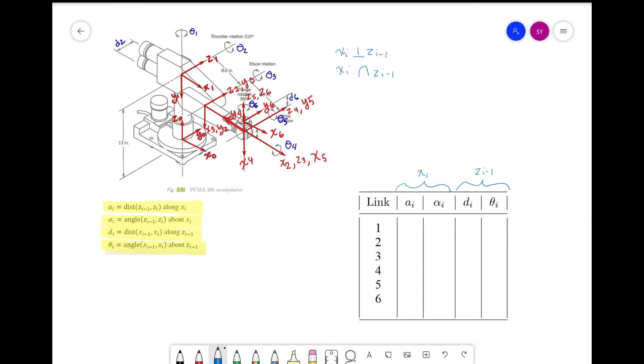For link 1, we see that a is 0 as there is no distance between z0 and z1 along x1. For alpha, let's see what we need to do in order to have the z-axis align. We have z0, z1, and x0. Positive rotation is that way and we need z0 to rotate negative 90 degrees in order for the axis to align.